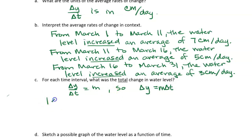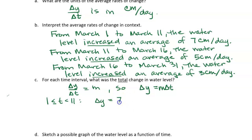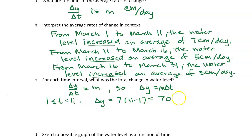For the first time period, from March 1st to March 11th — that's the first 10 days of March — delta y equals the average rate of change, which was 7 centimeters per day, multiplied by delta t, which is 11 minus 1. We get a total change of 70 centimeters. So over the course of that first 10-day period, the water level rose by 70 centimeters.